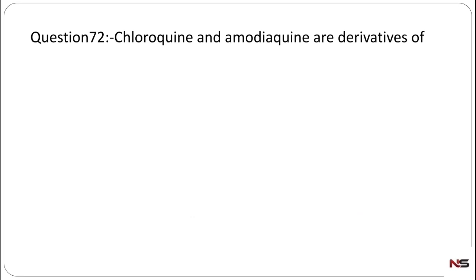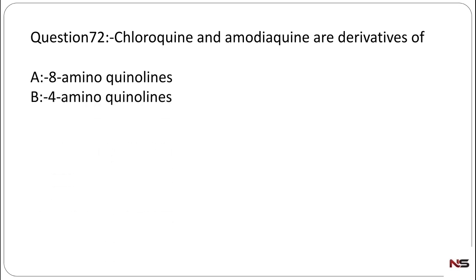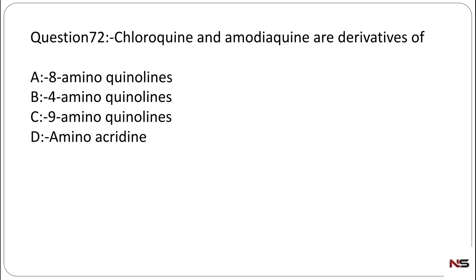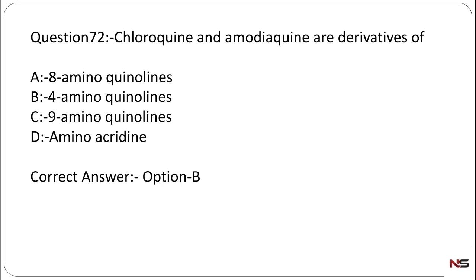Question number 72: Chloroquine and amodiaquine are derivatives of which aminoquinoline? Option A: 8-aminoquinoline, Option B: 4-aminoquinoline, Option C: 9-aminoquinoline, Option D: aminoacridine. Chloroquine and amodiaquine are antimalarial drugs. The correct answer is Option B, 4-aminoquinoline. One more thing to note: primaquine is an 8-aminoquinoline derivative.